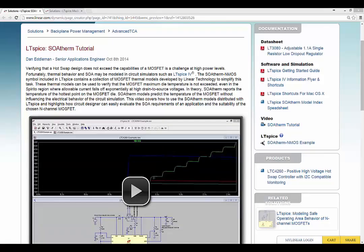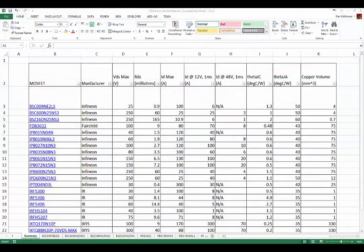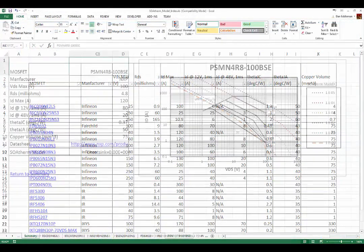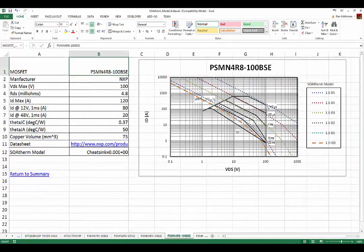Also note, on the webpage that contains this video, there's a link on the right side to an Excel spreadsheet that contains information about the MOSFETs modeled by SOATherm. This includes maximum junction temperature and the manufacturer's SOA plots, as well as the modeled SOATherm curves.